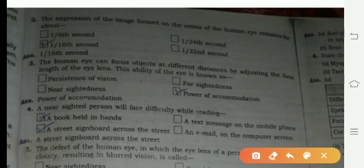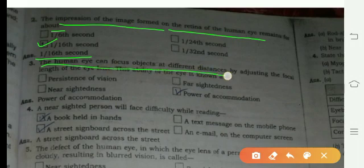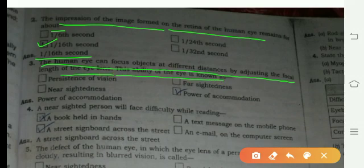The impression of the image formed on the retina of the human eye remains for about one-sixteenth second. The human eye can focus objects at different distances by adjusting the focal length of the eye lens. This ability is known as power of accommodation.